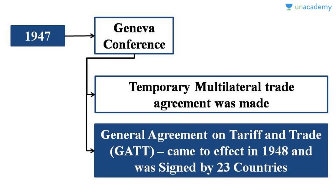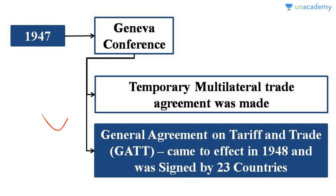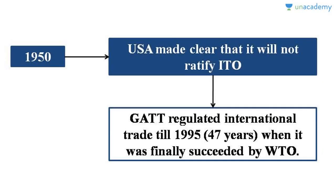Until ITO was formed, there was no international agreement to regulate international trade. So the USA came with a proposal to make a temporary agreement to regulate international trade until ITO was formed. These countries met at Geneva and came up with a temporary multilateral trade agreement called GATT — General Agreement on Tariffs and Trade — which came into effect in 1948 with 23 countries.